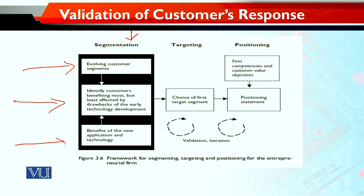Alongside this, another important task is understanding the benefits of the new application and technology, and whether related technologies are also evolving. For example, the digital camera came first, then the phone arrived, then different phone variants appeared, and eventually the phone became a smartphone — that was evolution in related technology. Similarly, new customer segments being added are evolving customer segments that will ultimately keep growing your desired target segment.